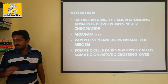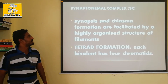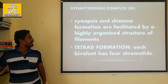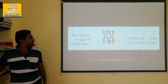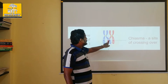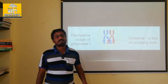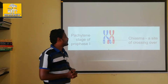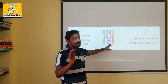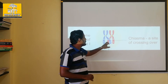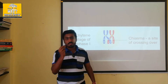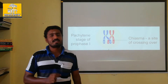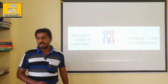In the Pachytene stage there is a step-by-step process. First of all, synapsis is a process. In the point of attachment, sister chromatids and non-sister chromatids are there. In the non-sister chromatids, the point of attachment is called chiasma.